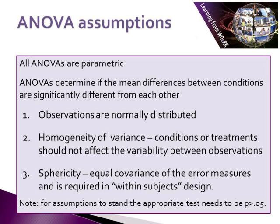The ANOVA is very robust to violations of the normality assumption. However, violations of the homogeneity of variance can be more serious and are likely to cause the data to appear more significant than it actually is.